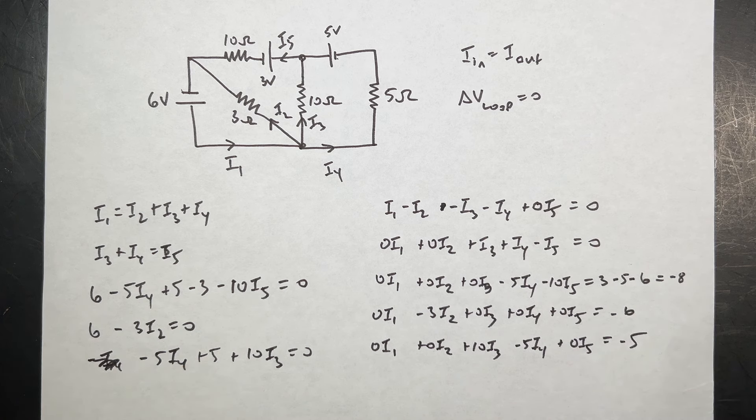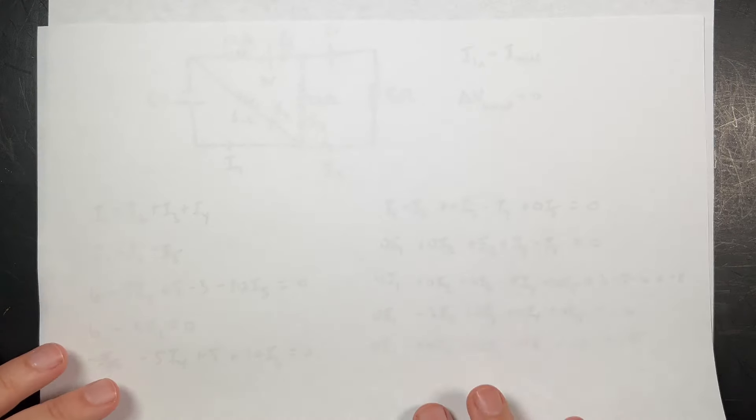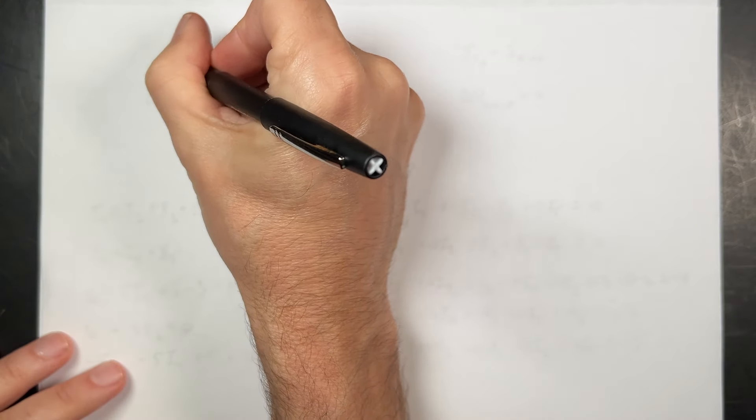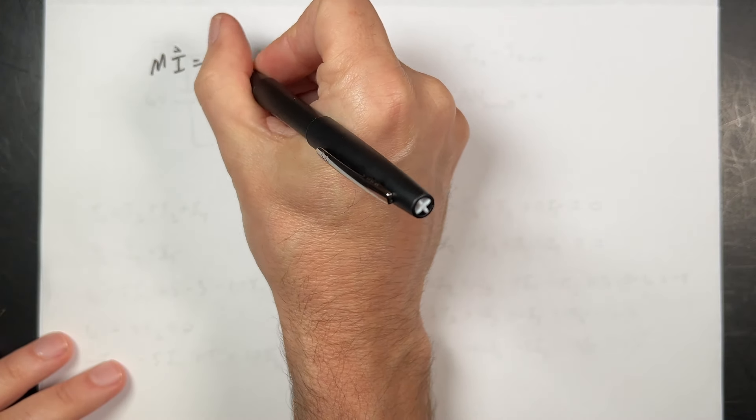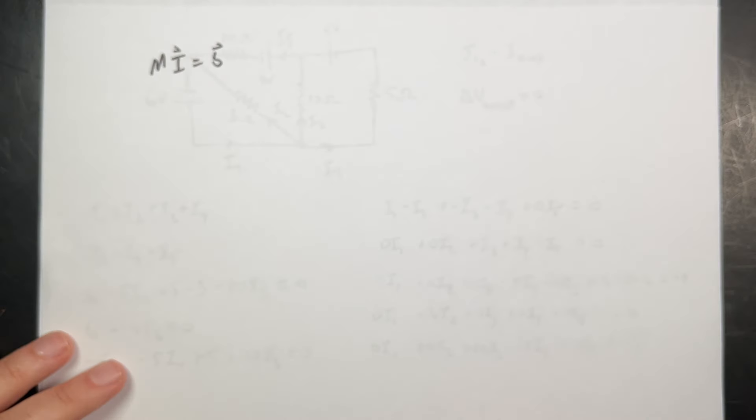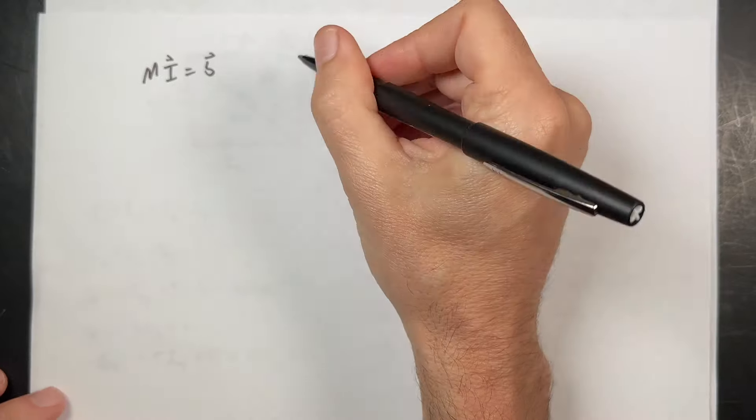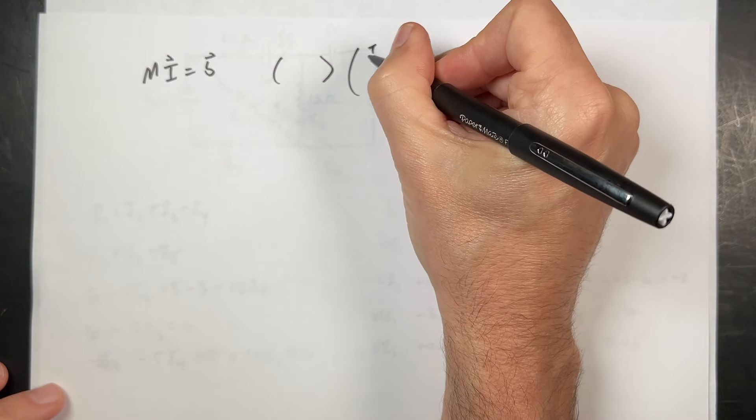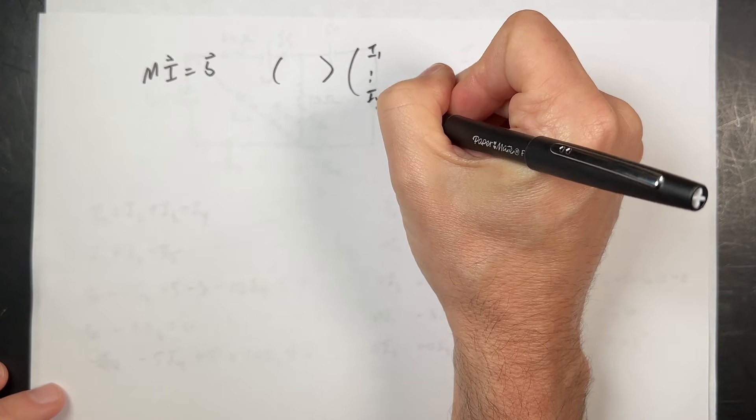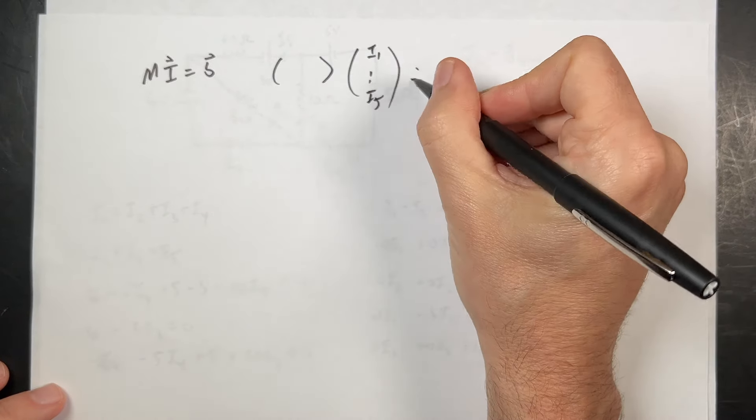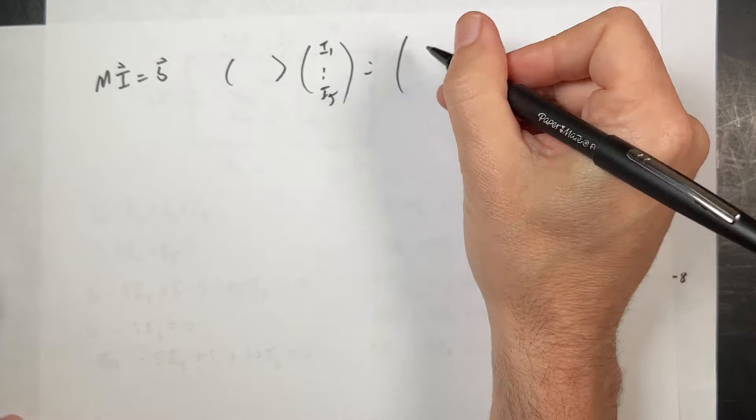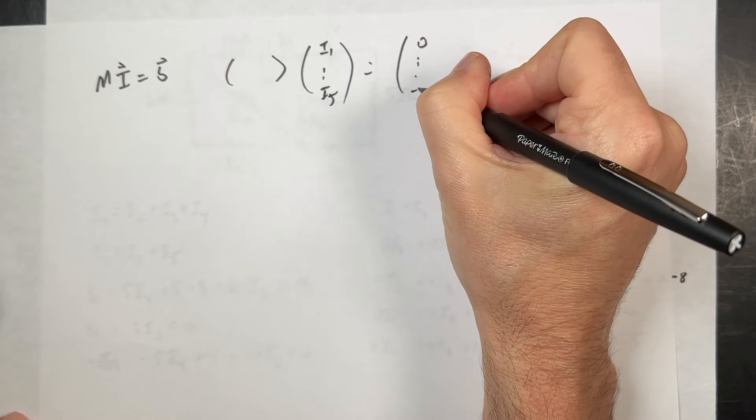And then we're down here on this one, zero I1 minus three I2. And you have to say it like that up and down, or it just doesn't work. Plus zero I3 plus zero I4 plus zero I5 equals negative six. And then finally down here, zero I1 plus zero I2 plus 10 I3 minus five I4 plus zero I5 equals negative five.